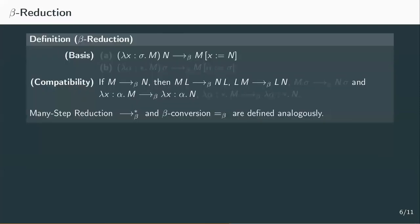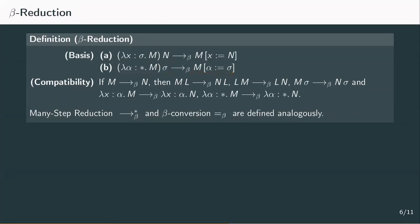When defining one-step beta reduction, we can again take the definition from the simply typed lambda calculus and adjust it slightly. We just have to add beta reduction for type abstractions: when we apply a type abstraction lambda alpha dot m to a type sigma, we reduce this to m where we substitute every occurrence of type alpha by sigma. We also have to add two new cases for type application and type abstraction to the compatibility rule. Many-step beta reduction as the extension of one-step beta reduction, and beta conversion as the symmetric extension of many-step beta reduction, are defined analogously. Note that beta reduction and conversion only apply to legal terms, not pre-typed lambda 2 terms.